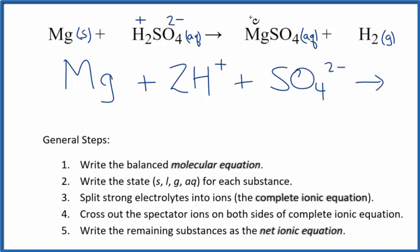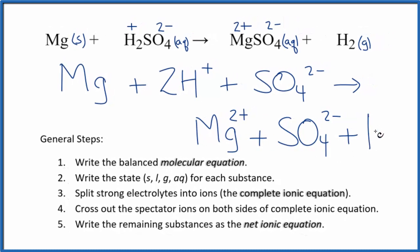For the products, magnesium is in group two on the periodic table so it's going to be 2+, bonded to our sulfate which is 2-. So we have Mg2+ plus the sulfate ion SO4 2-, plus H2. We don't split H2 apart because it's a gas. We don't split gases apart in net ionic equations either. Right now we have the complete ionic equation.